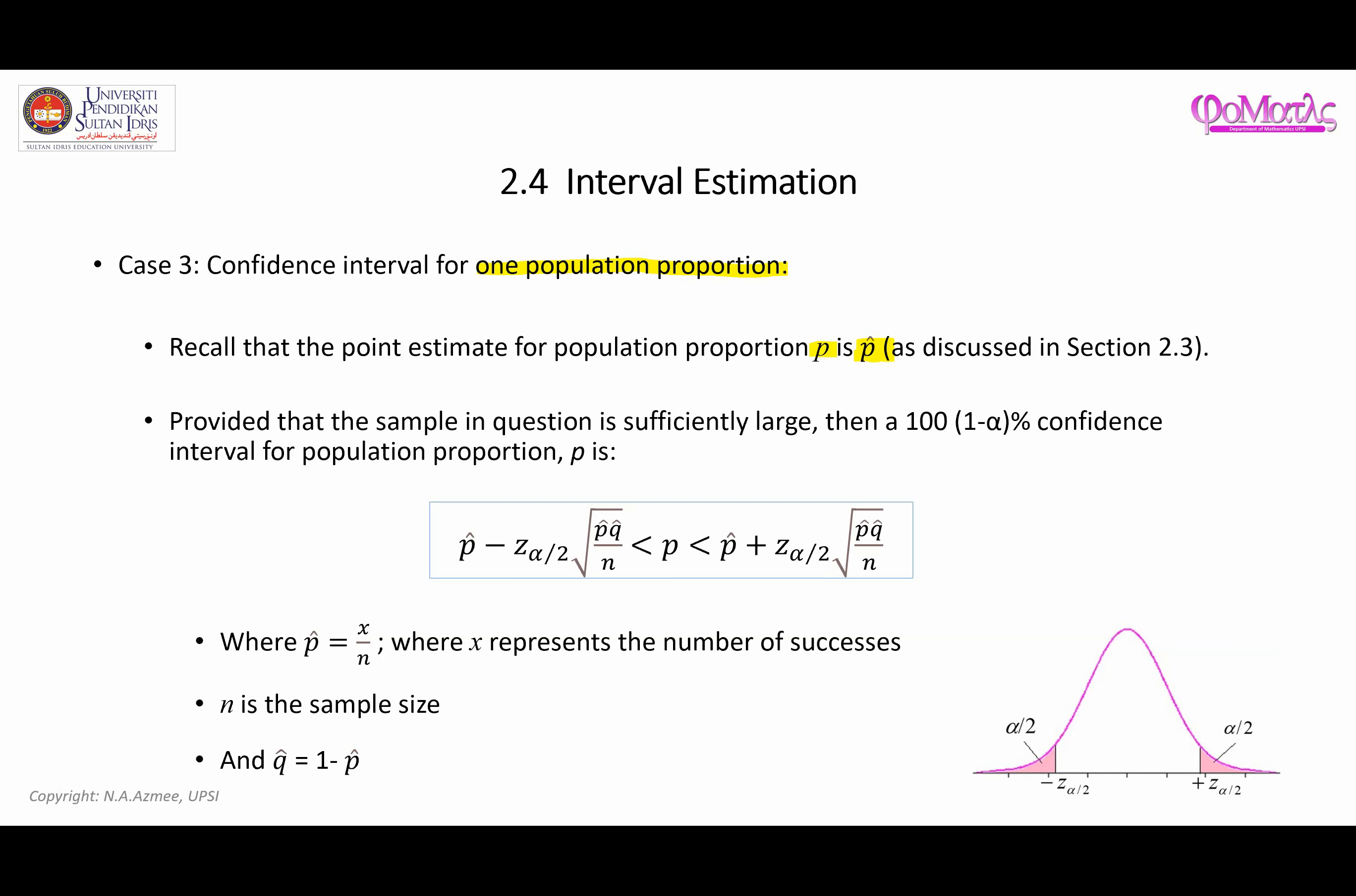Provided that the sample is sufficiently large, then the confidence interval for the population proportion is given by this formula here. You can see that we have the same term on this right side with this one over here. The term here is similar, the difference is just in the minus and plus sign.